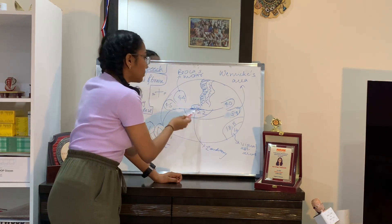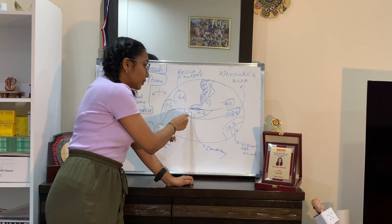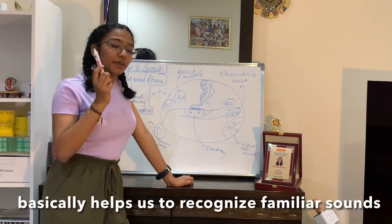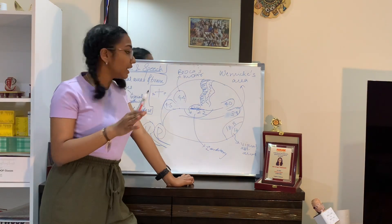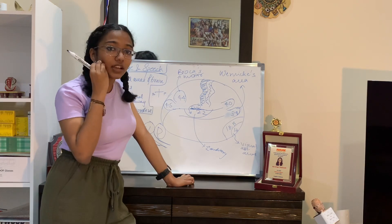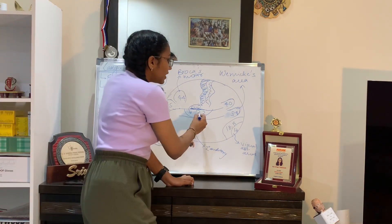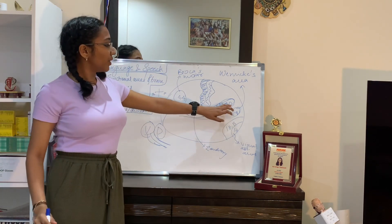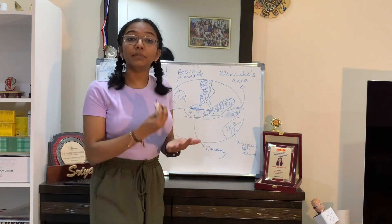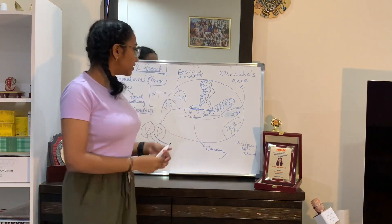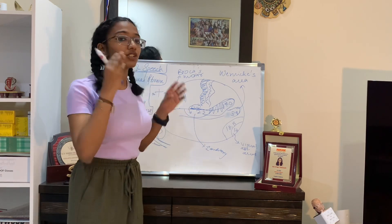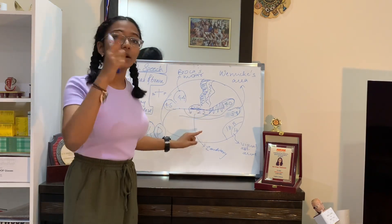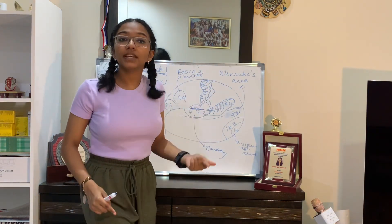Areas 41 and 42 interpret the tone, pitch, and frequency of the sentence, but we still can't understand the meaning yet. Signals then go to area 22, the secondary auditory cortex, which associates the heard words with previous memory and tells us that what we're hearing are words and not gibberish. Very closely associated with area 22 is Wernicke's area, which interprets the actual meaning of those words.